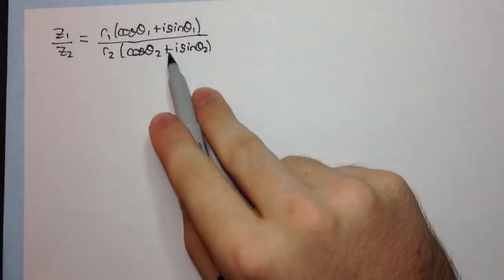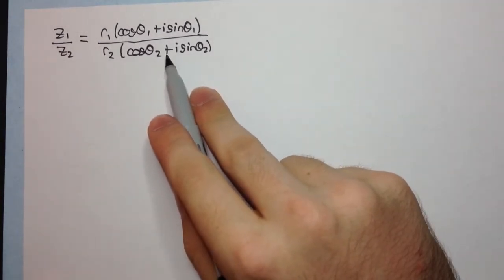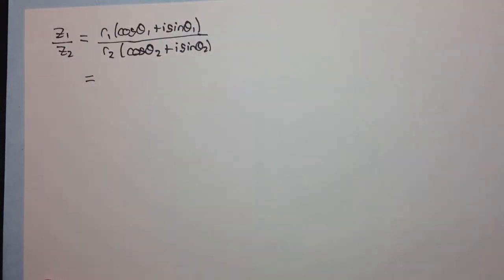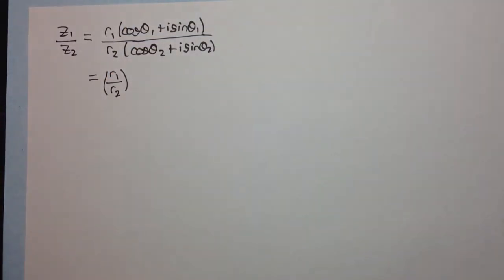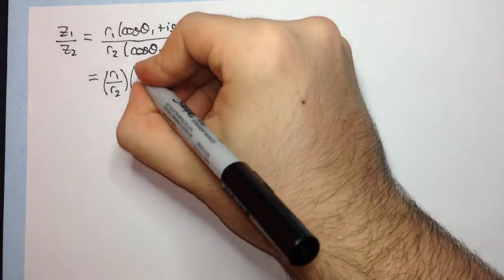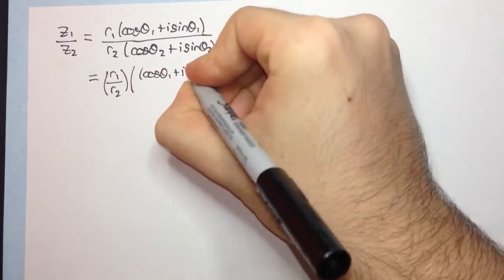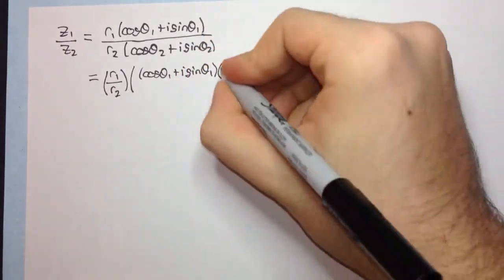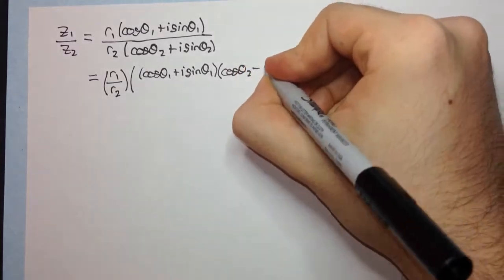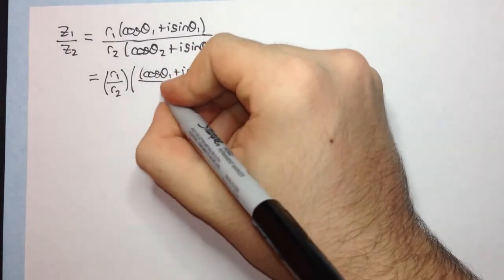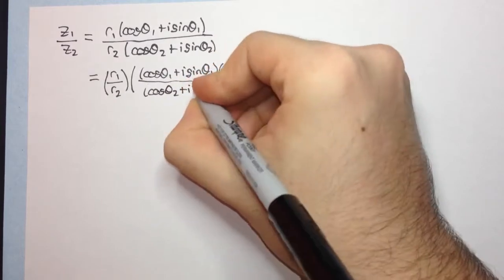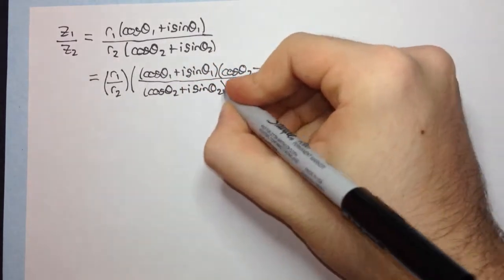Okay. Now, we have a complex number in the denominator of a fraction, and so we want to realize this. So remember, the process of realizing was multiplying by the conjugate of the denominator. Now, we can take out this r1 r2 here and leave it to the side for a moment. Now, we multiply top and bottom by the conjugate of the denominator. So we're going to multiply this by the conjugate of the denominator, which is cos theta2 minus i sin theta2. And here we're going to get cos theta2 plus i sin theta2 times its conjugate.